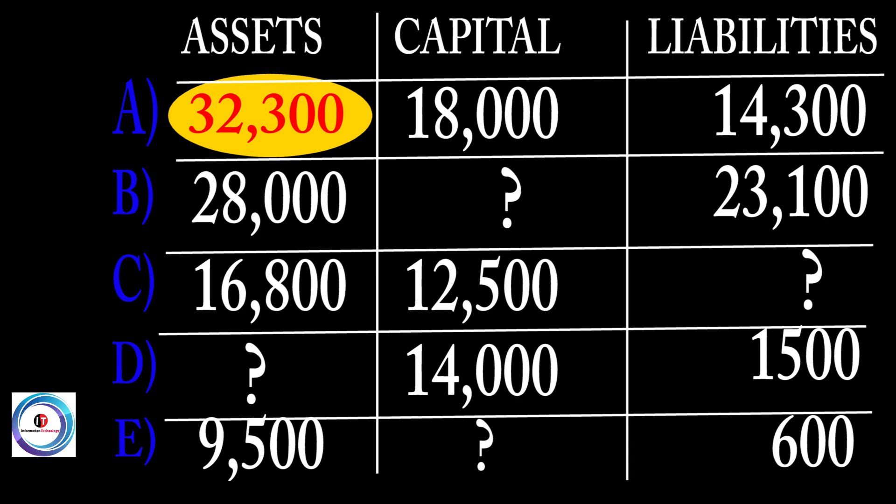So in accounting, you just put a small notation and a line there. You go back to your equation — the equation is now complete — and you are going to get 32,300. So that is the mark. Your asset equals the capital plus liability, so 32,300. This is how we have derived the answer.